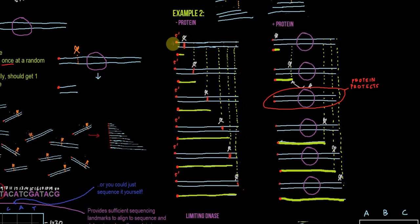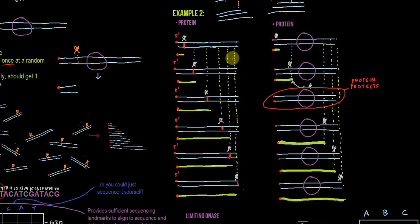Let me show you what this means in the context of a protein binding or not binding. We've got an example piece of DNA that's labeled on one side — all of them labeled the same way, on the same strand, on the same side. Just imagine this DNA is six nucleotides long. This is way too short for a real experiment, but for simplicity I've just made it six nucleotides. So we've got nucleotides one, two, three, four, five, six.